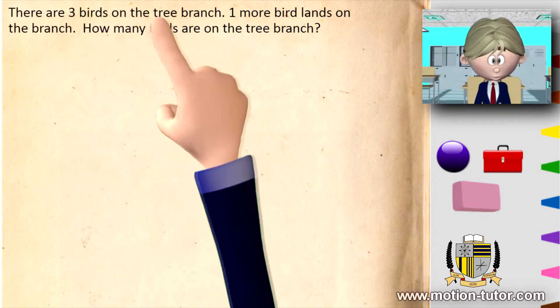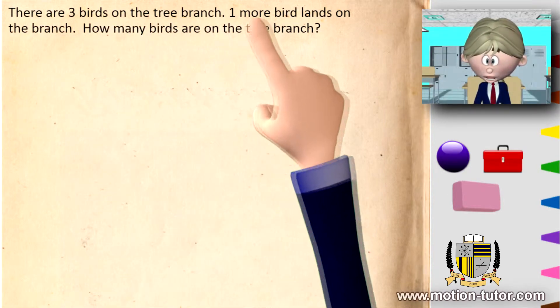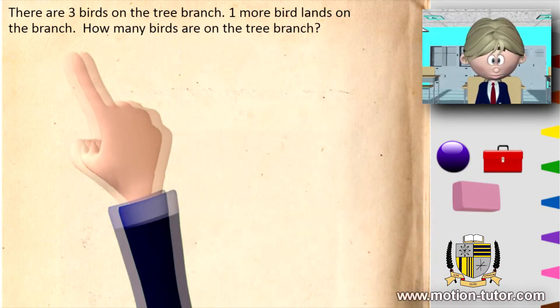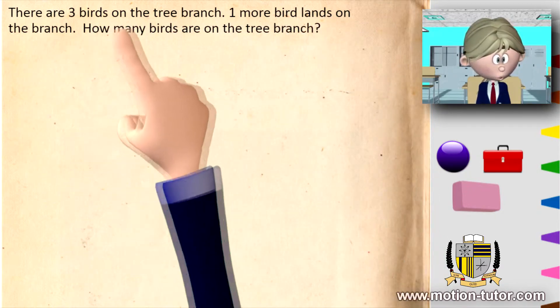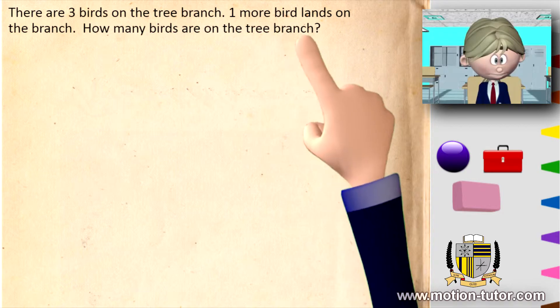There are three birds on the tree branch. One more bird lands on the branch. How many birds are on the tree branch?